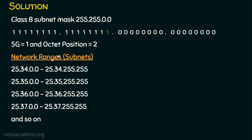For the next subnet, we need to add the subnet generator in the second octet position. Just add 1 to the second octet — we get 35. So the next subnet starts with 25.35.0.0. Add 1 to the second octet of that subnet, we get 25.36.0.0. Add 1 again, we get the fourth subnet: 25.37.0.0, and so on.